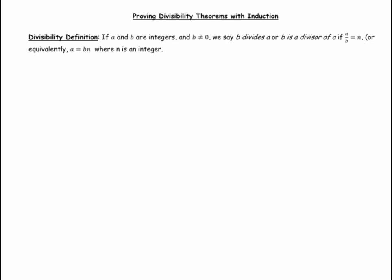if A over B equals N, or equivalently, A equals B times N, where N is an integer.